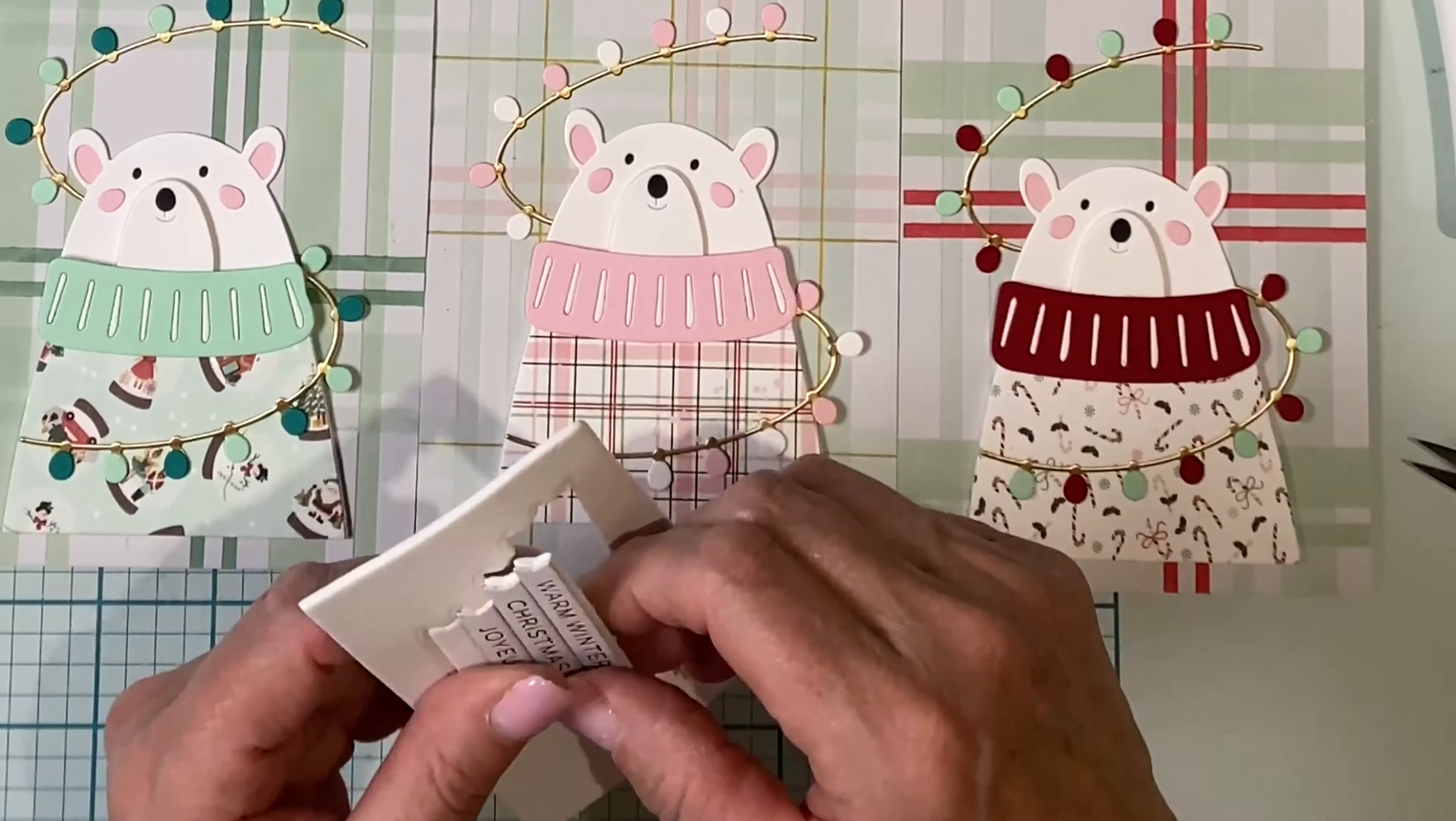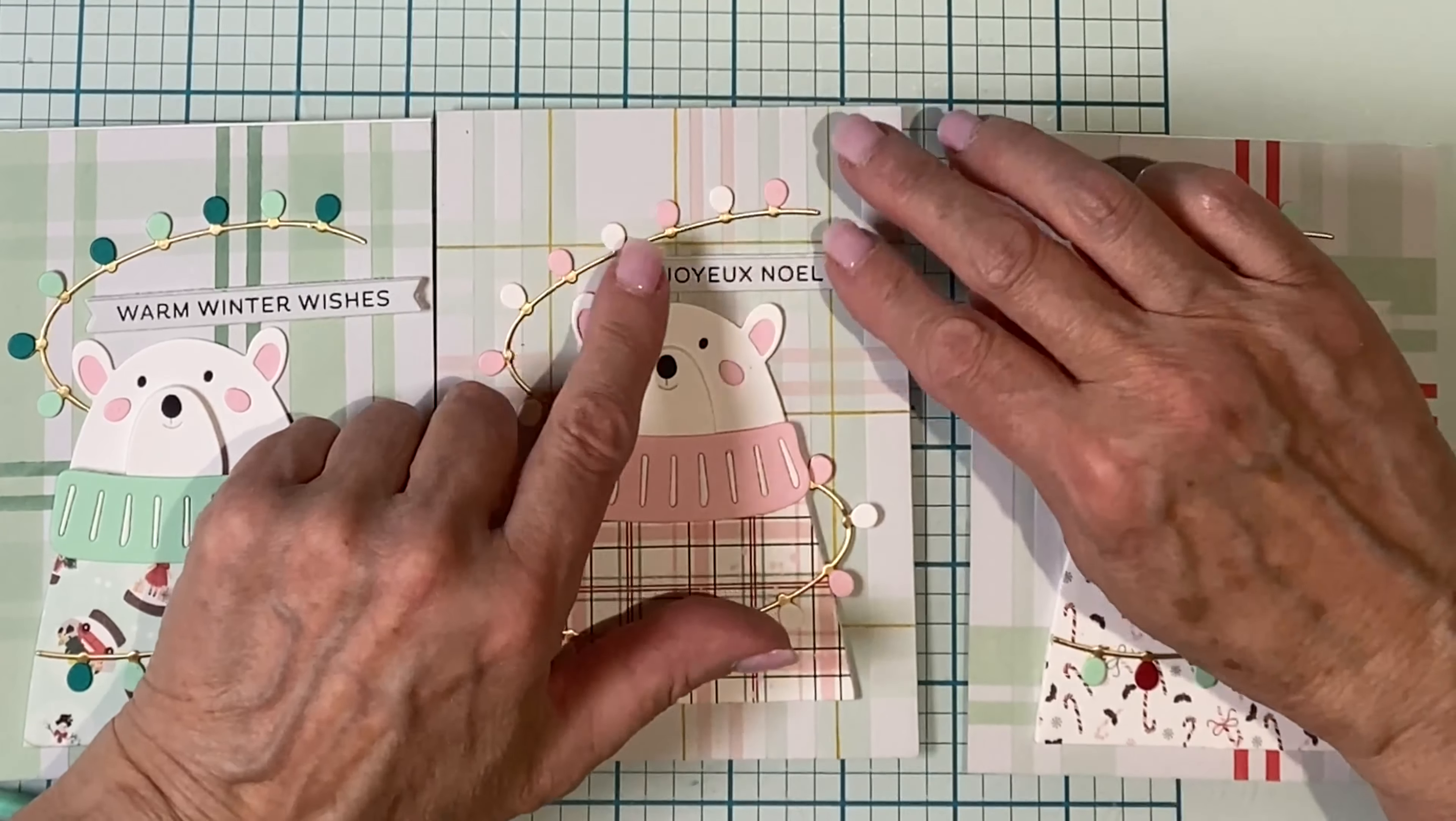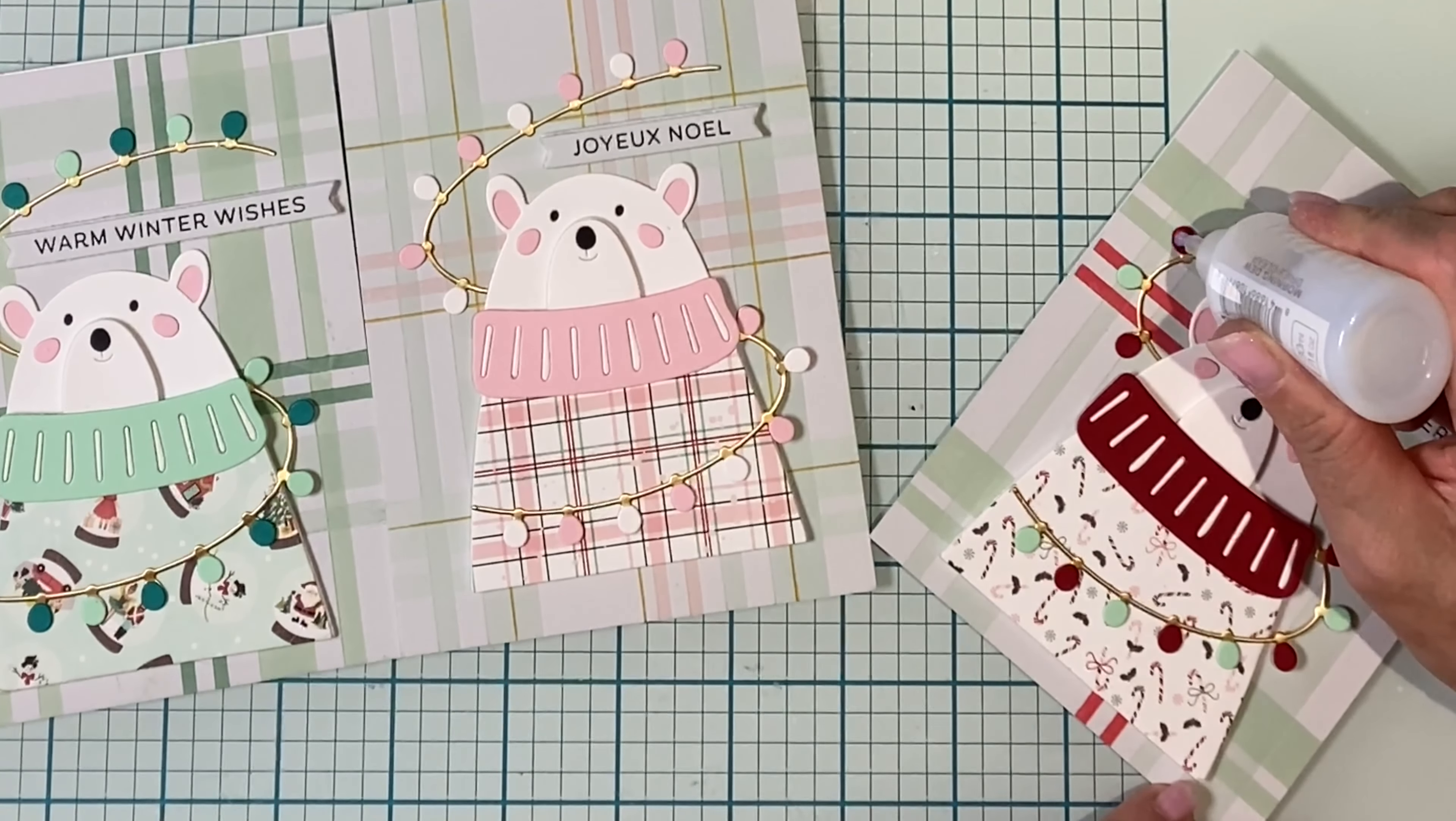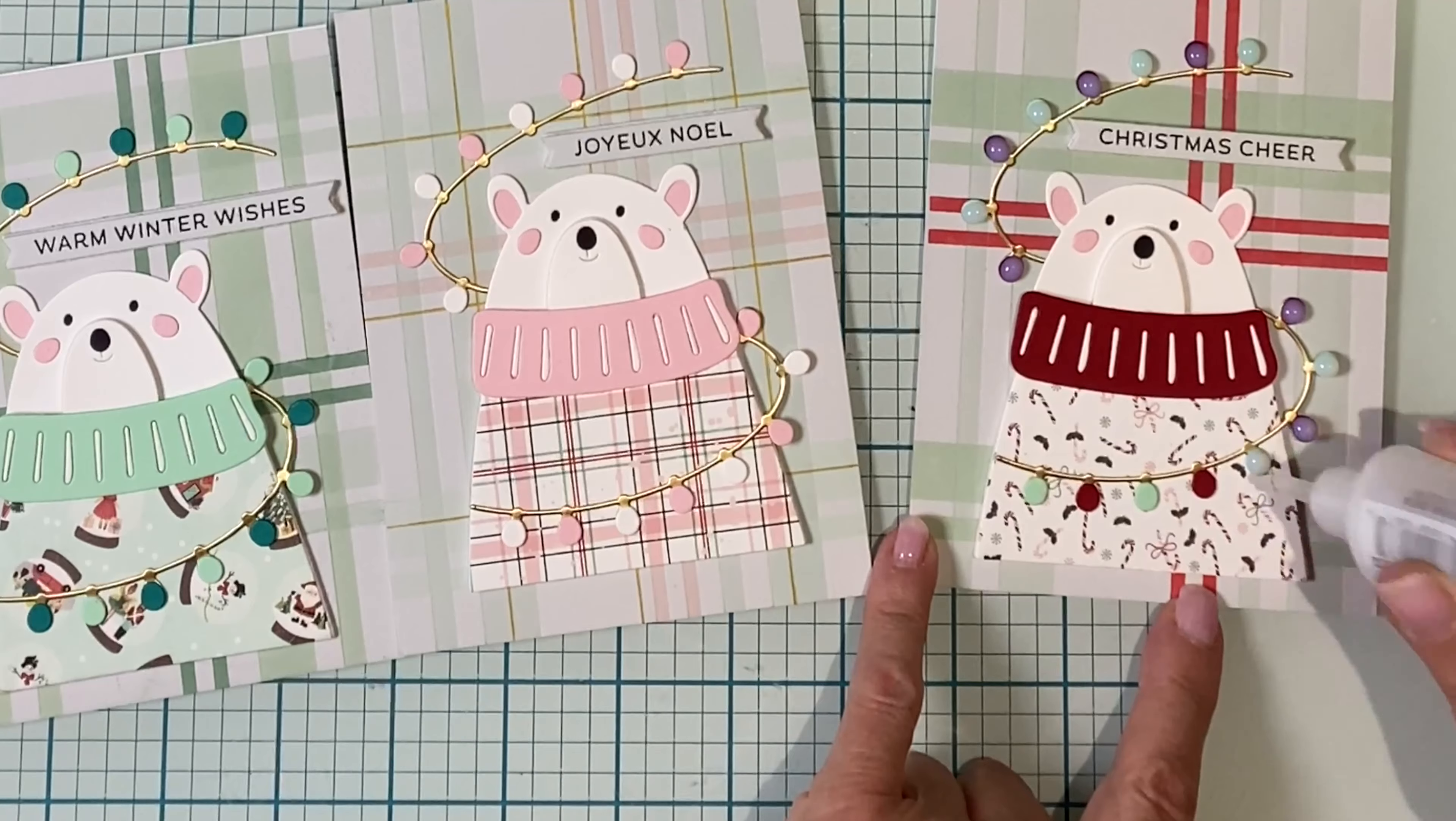The finishing touches for all three cards will be done in assembly line fashion and I start by popping out those sentiments out of the foam. They're adhered so they're tucked between the string of lights and the top of the bear's head. The plaid background is pretty helpful here because I can use it as a reference to line up my sentiments straight. I'll wrap it up by adding some Nuvo Crystal Drops Morning Dew to each of the light bulbs. Initially this medium is cloudy but as it dries it will be clear. These light bulbs will be shiny and dimensional.